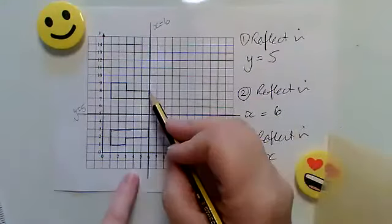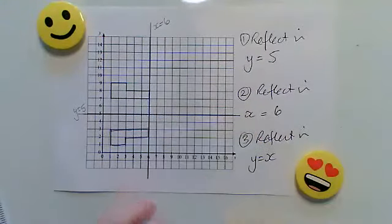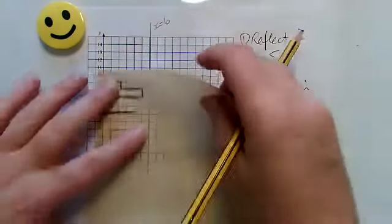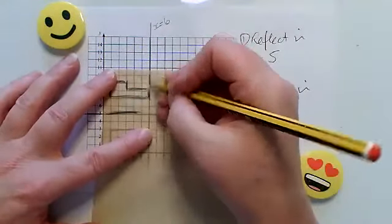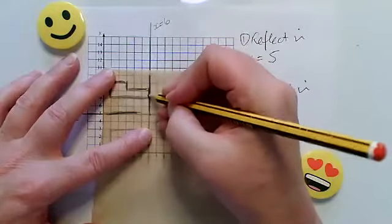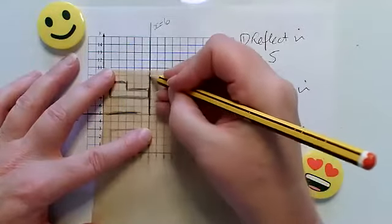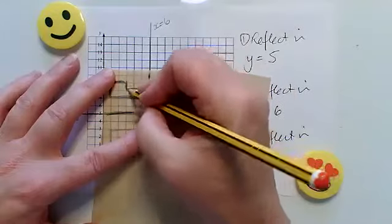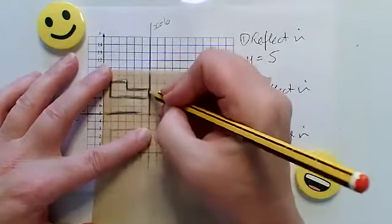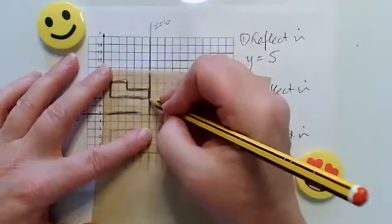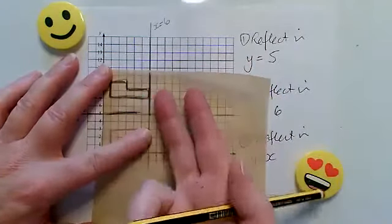Looking at the shape, I can use my tracing paper again. You can see that part of the shape, this part here, actually lies on the line of x equals 6. So these points here will remain invariant, they're not going to change, but the rest of the shape will flip over here.